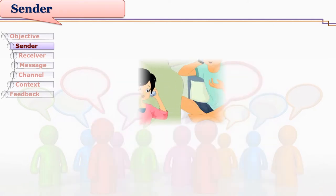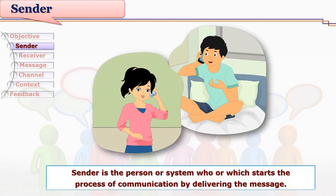Raghav receives a call from his friend Neha, who missed her previous class and wishes to know about the topic discussed in it. Though Raghav is receiving the call and will talk to Neha, Neha is the main sender of the message because she made the call and initiated the dialogue over phone with Raghav. So Neha is the sender.